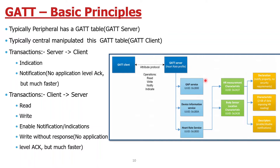Every profile can have multiple services — for example, a GAP service, a device information service, and a heart rate service. Every service has a Universally Unique Identification number (UUID) to identify it. Below that, each service has different kinds of characteristics — for example, a heart rate measurement characteristic or a body sensor location characteristic. Every characteristic also has a UUID.